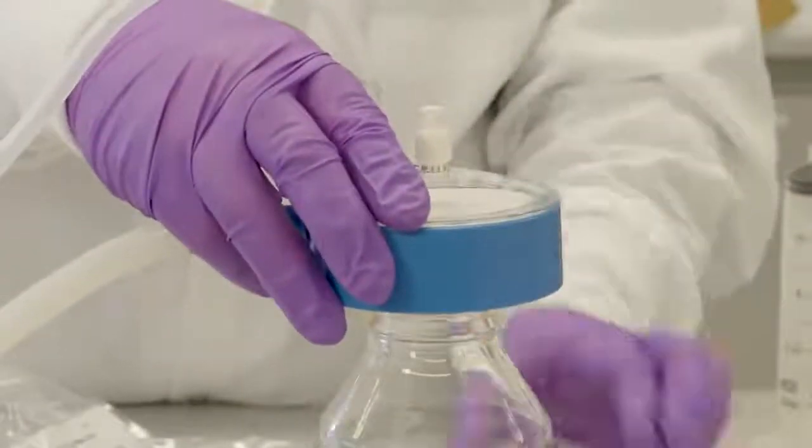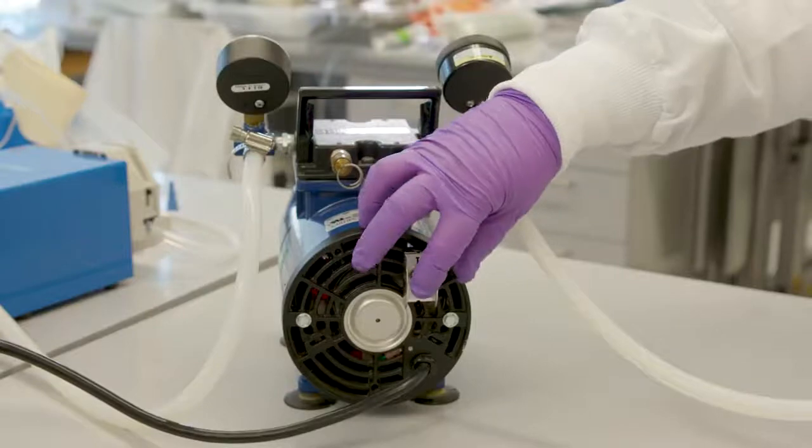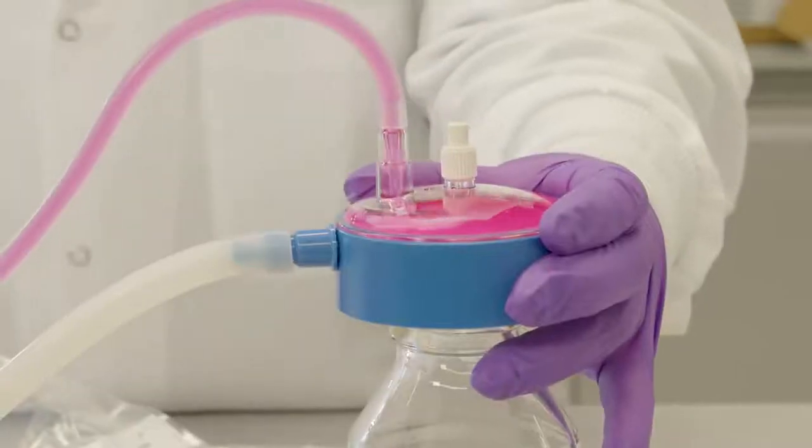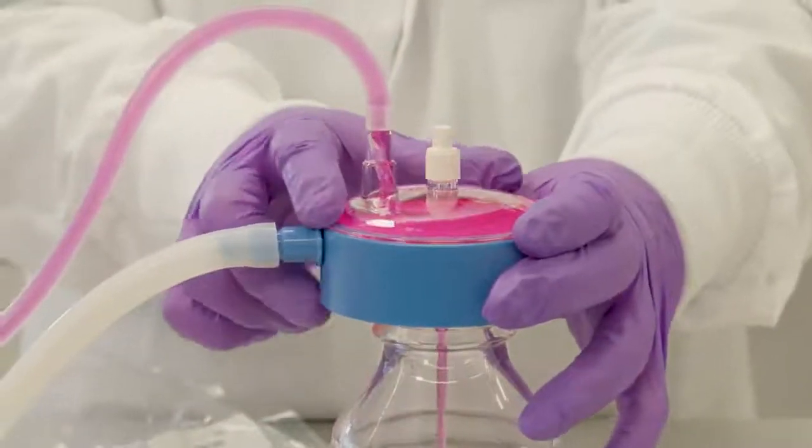Hold the SteriCap Plus onto the top of the receiver bottle and turn on the vacuum to begin filtration. Continue holding the unit until the vacuum source secures the filter unit into place and the flow starts into the receiver bottle.